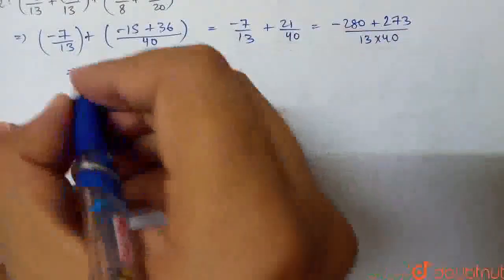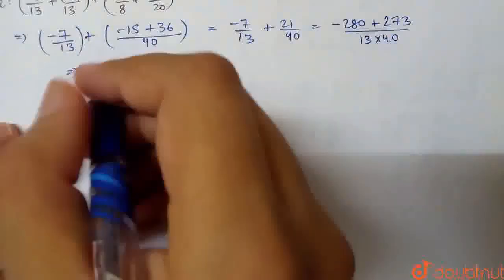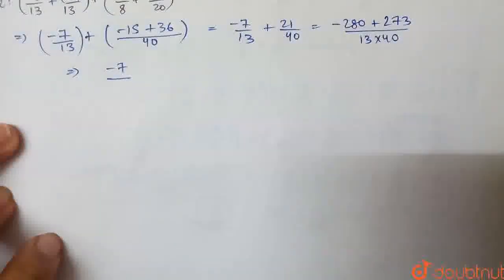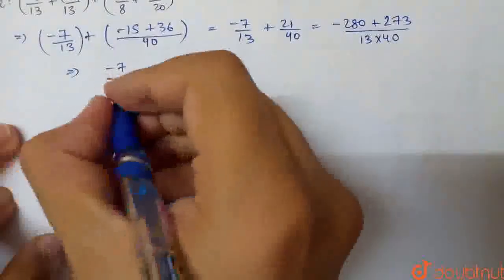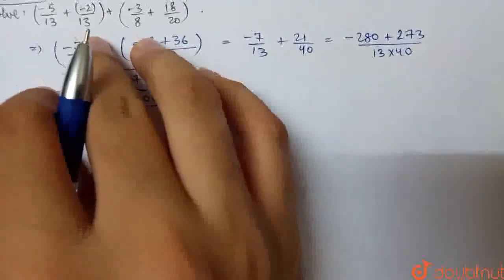Now, minus 280 plus 273, that is basically minus 7. And the denominator is 520. So, minus 7 over 520. This is our required value of this given expression.